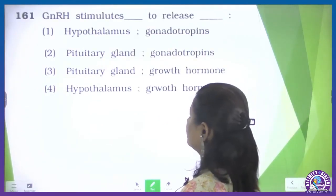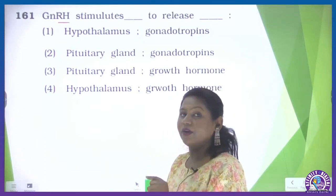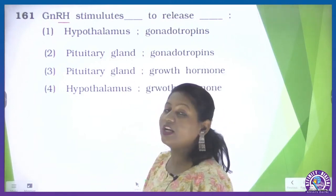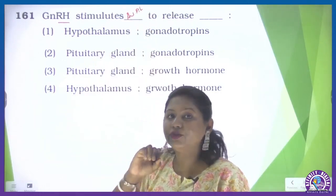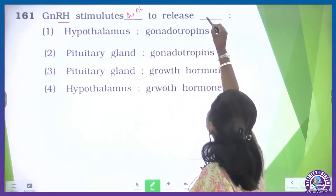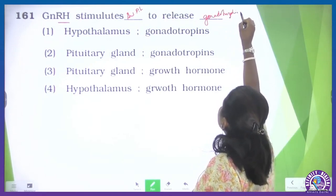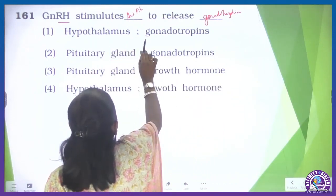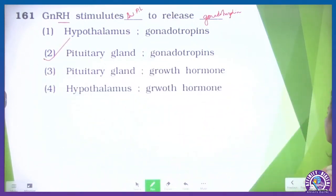GnRH — whenever we say Rh, Rh is a releasing hormone of the hypothalamus. IH and Rh are hormones of the hypothalamus. They stimulate the anterior pituitary gland. The pituitary gland is stimulated to release gonadotrophins. Gonadotrophic hormones are FSH and LH. So GnRH will stimulate the pituitary gland and cause secretion of gonadotrophins — the correct option is the second option: pituitary gland and gonadotrophins.